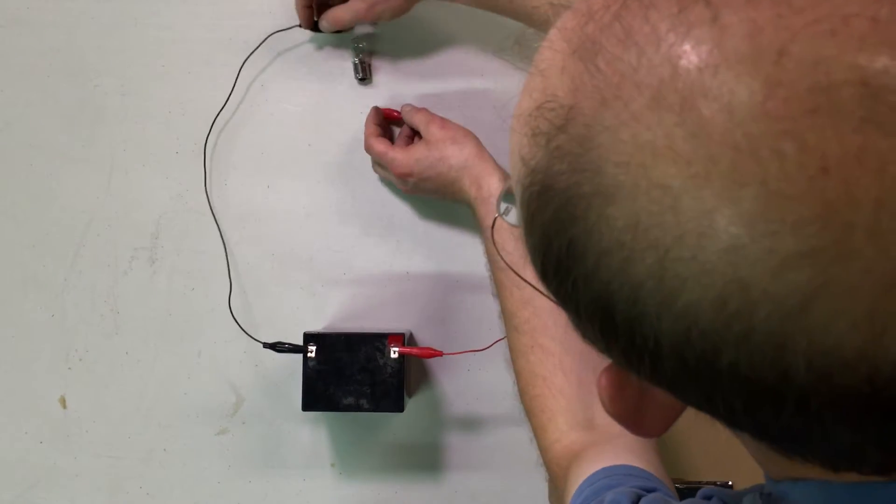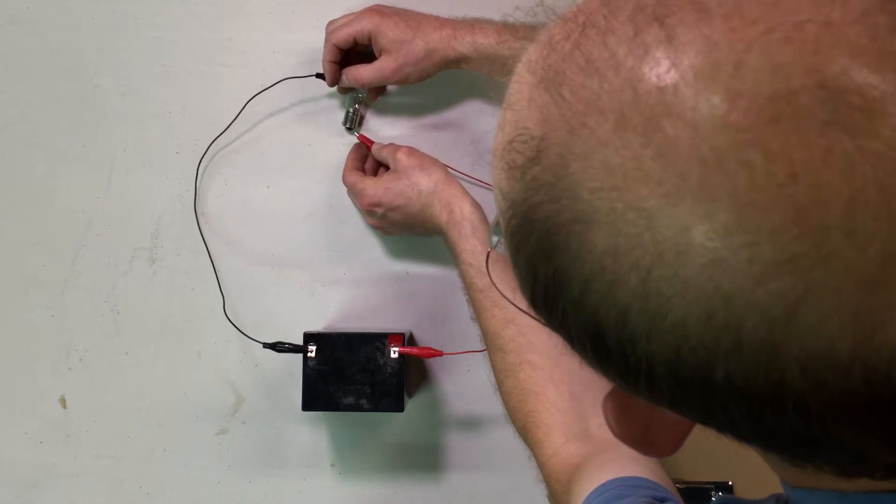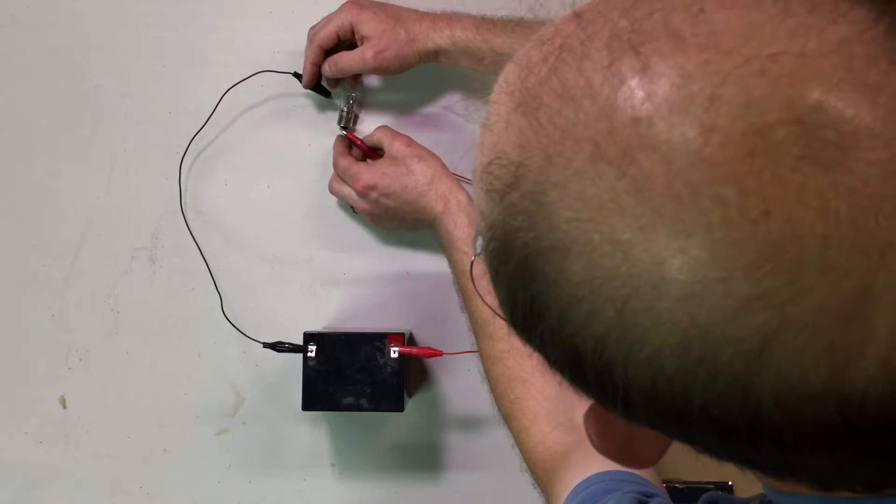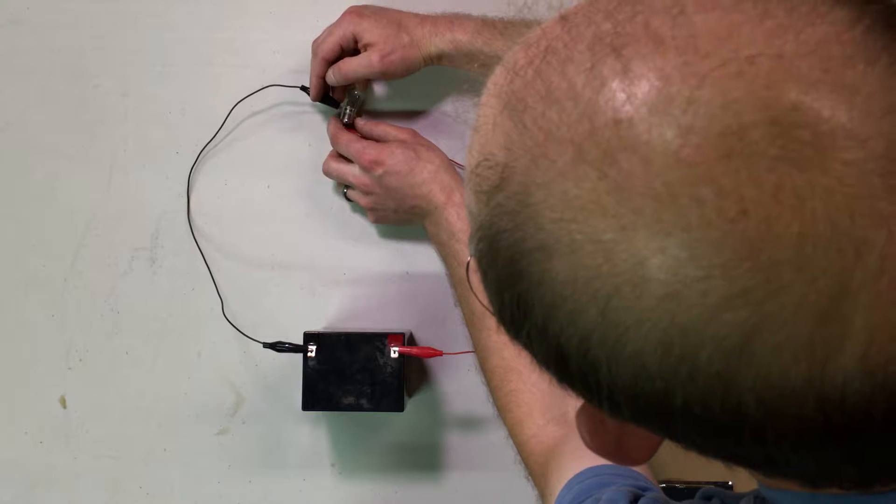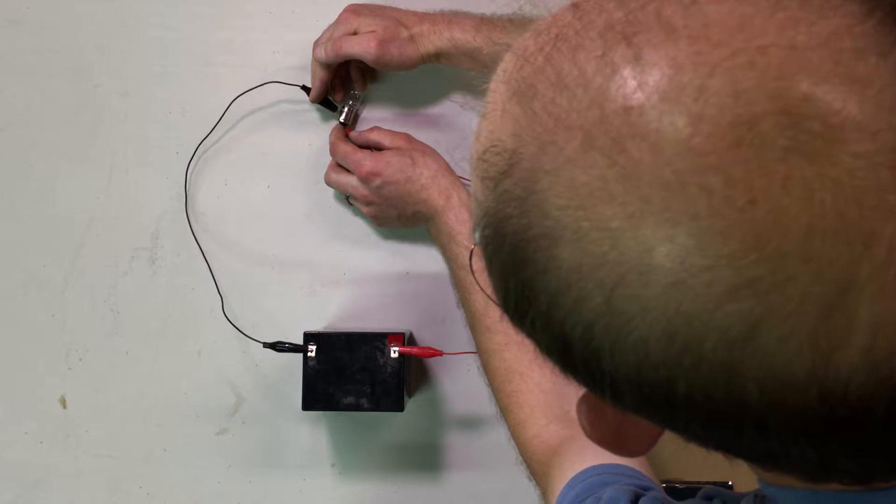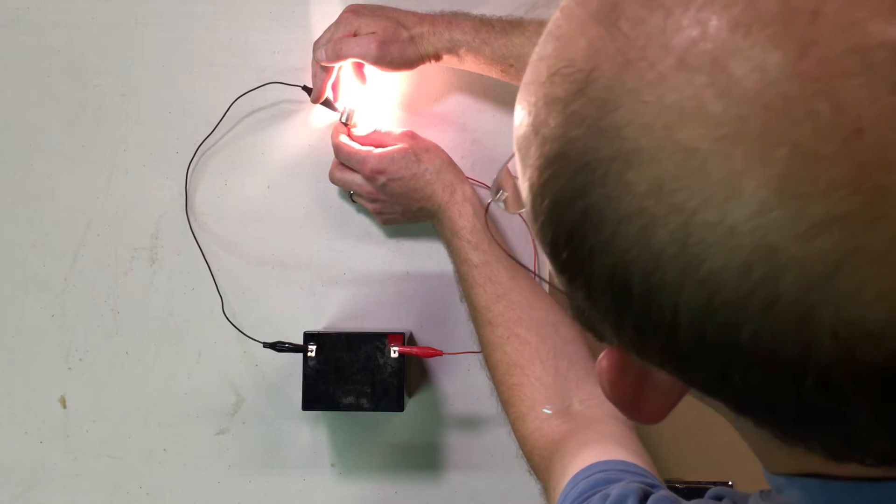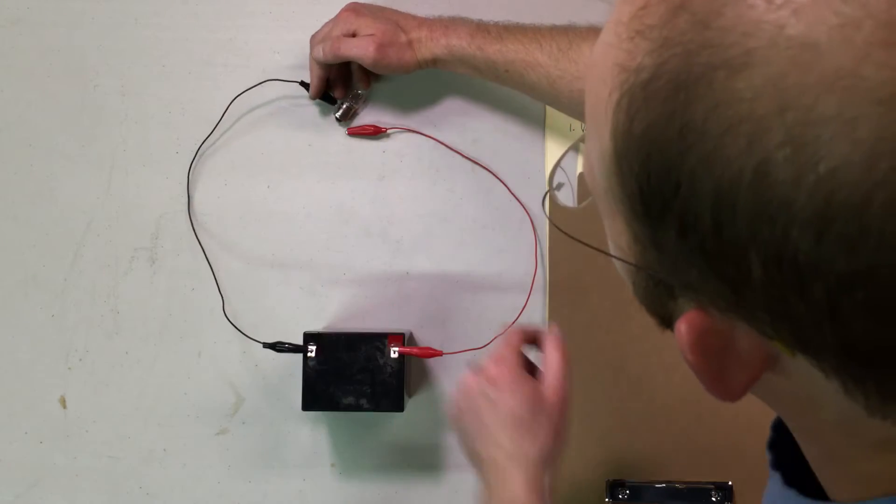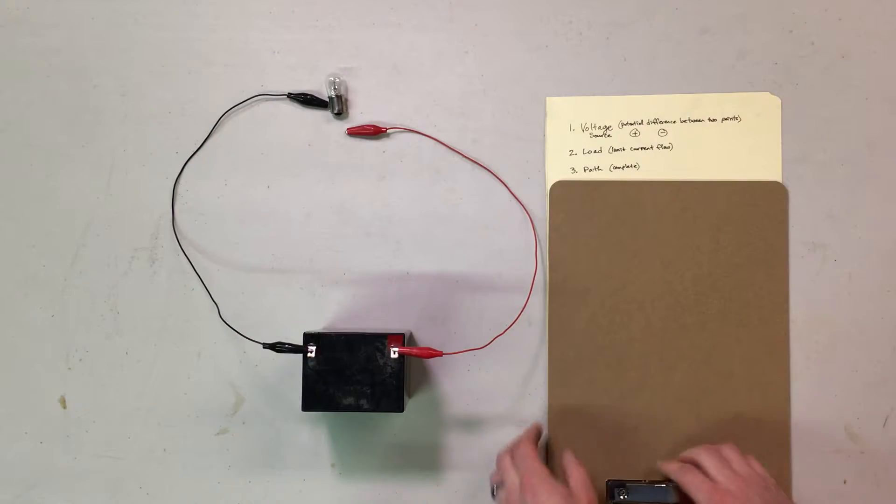If I connect the positive to this bottom terminal of the battery and the negative to the side of it, we have a complete electrical circuit. There's a complete path for the electricity to flow through.